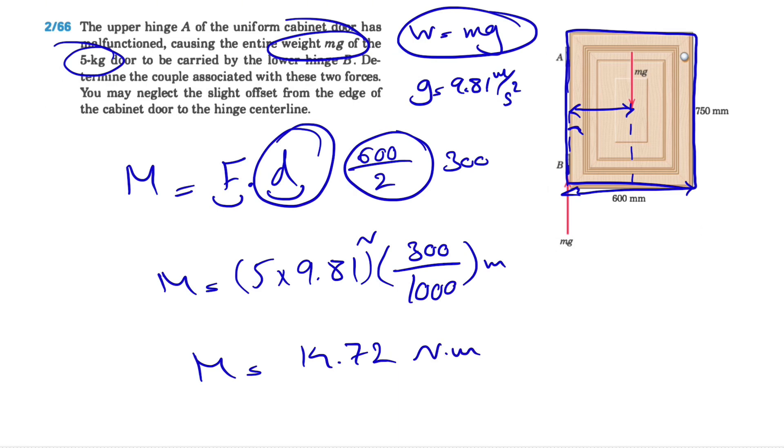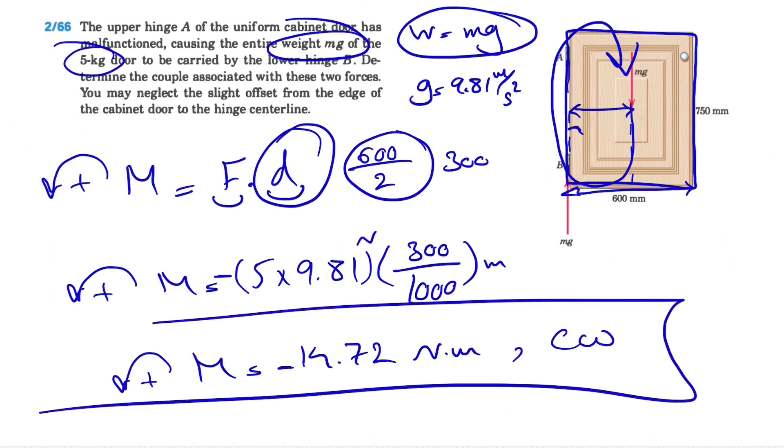So as always, we're going to call the counterclockwise moment positive. If you look at the couple that is produced by these two, we can see that the door is going to turn in this direction, which is a clockwise direction. So we have a negative sign and at the end we're going to write it down as clockwise. That would be the couple associated with these two forces and the final answer for this question.